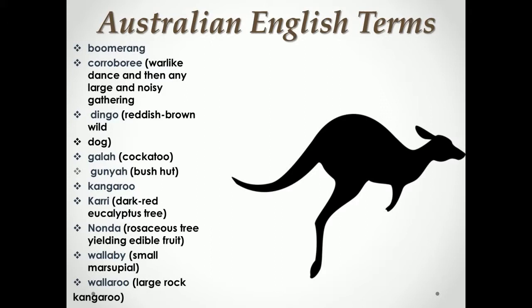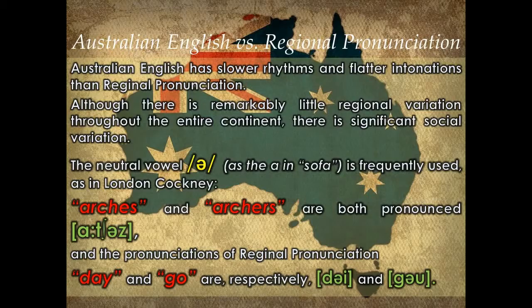Australian English has slower rhythms and flatter intonations than RP. Although there is remarkably little regional variation throughout the entire continent, there is significant social variation. The neutral vowel schwa, as the 'a' in sofa, is frequently used, as in London Cockney. Arches and archers are both pronounced alike, and the pronunciations of RP 'day' and 'go' become respectively 'd-schwa-I' and 'g-schwa-U'.